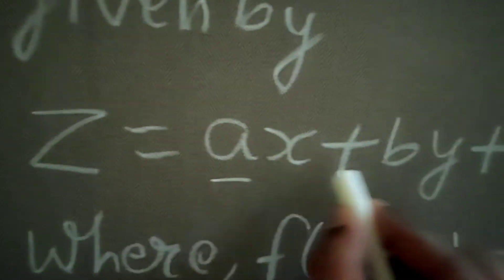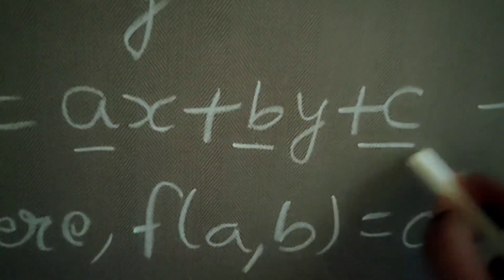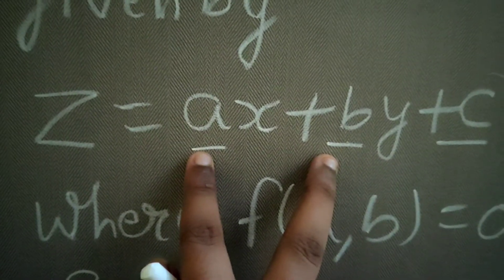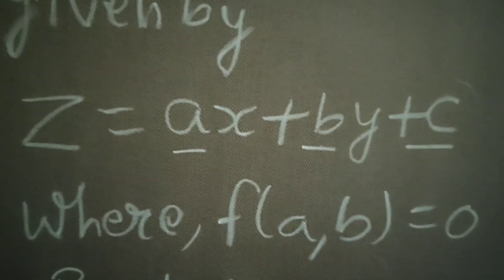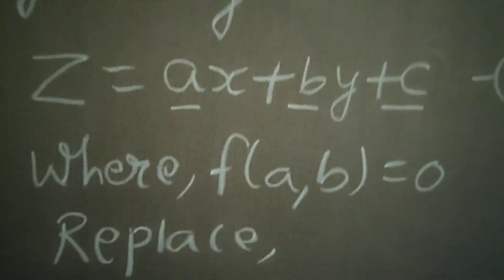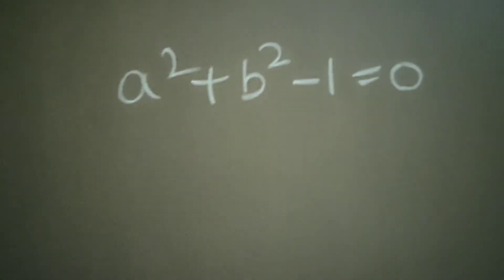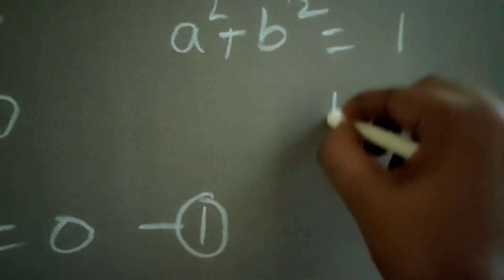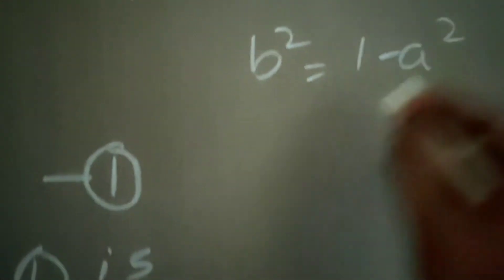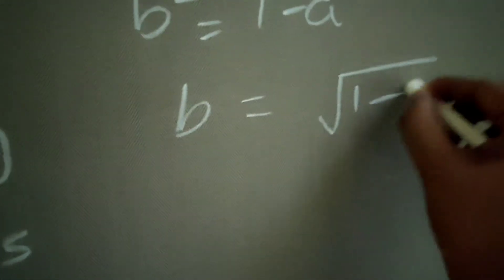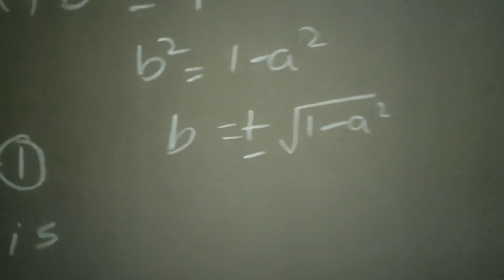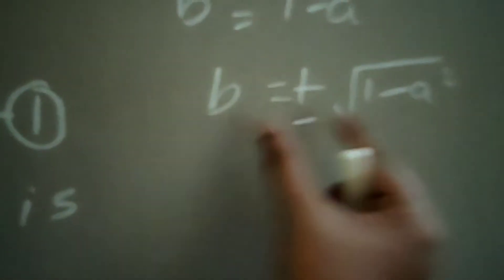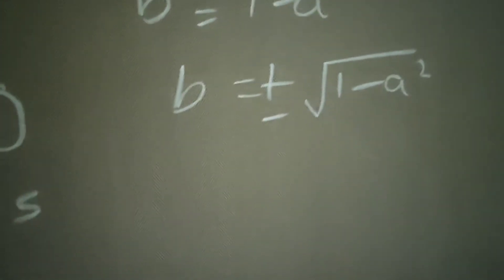Now, in the final solution, instead of having three constants a, b, and c, we keep c as a constant but make a and b into one constant by writing a in terms of b or b in terms of a. I am writing b in terms of a: from a² + b² = 1, we get b² = 1 − a², so b = ±√(1 − a²).